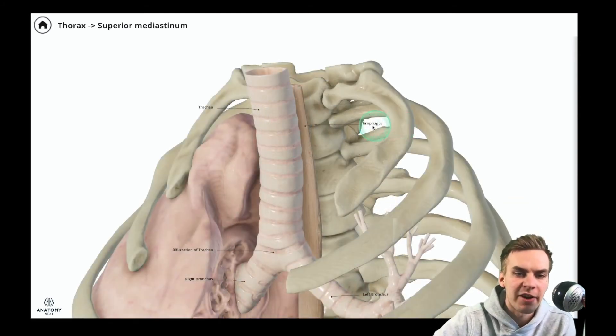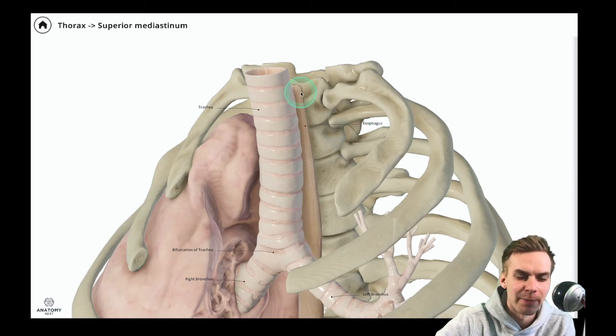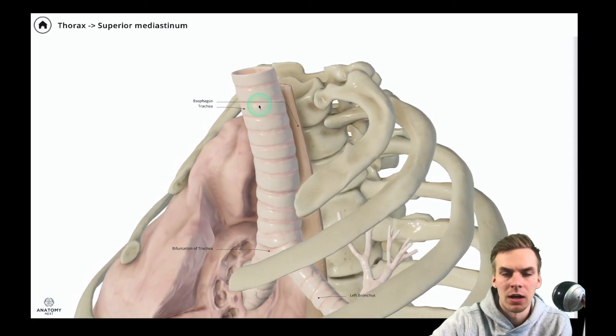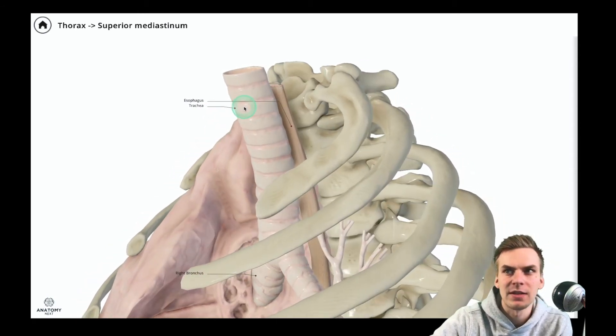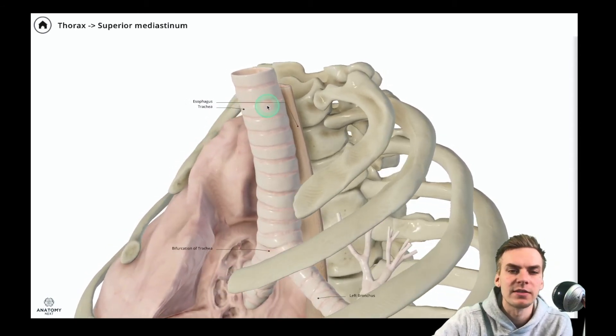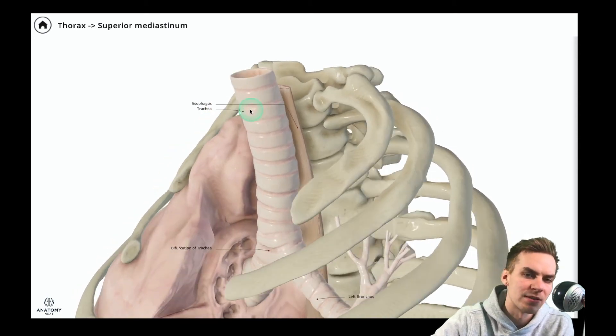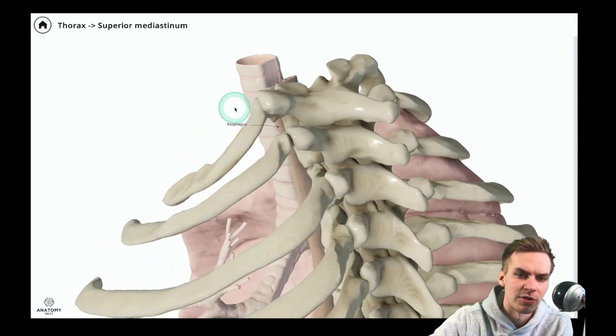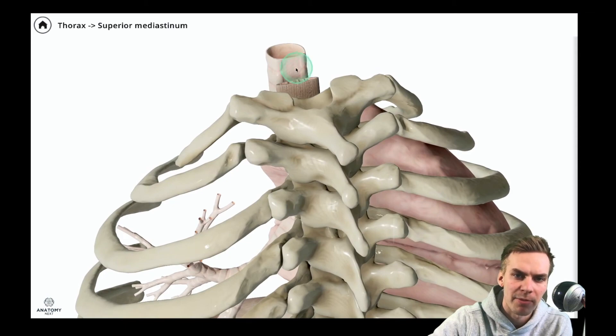And another thing about the trachea that we must know is that the trachea is composed of approximately 15 to 20 C-shaped cartilages and the posterior part of these cartilage rings are made of muscle of connective tissue. As you can see here we see a membrane here.